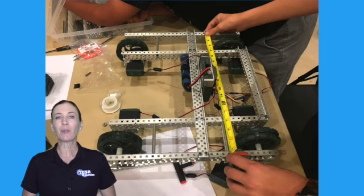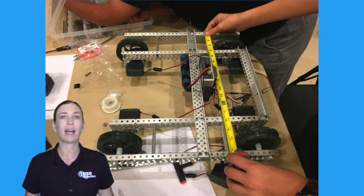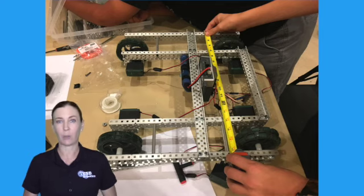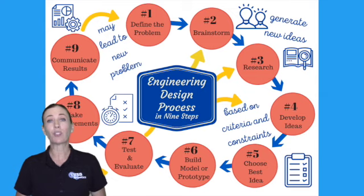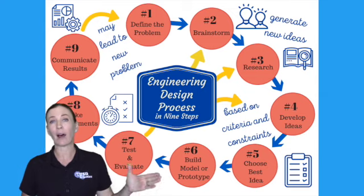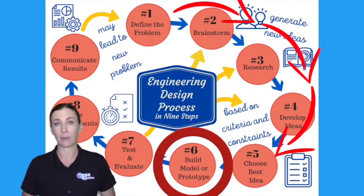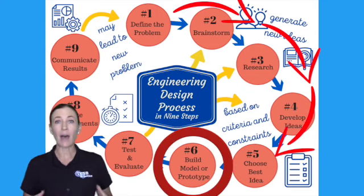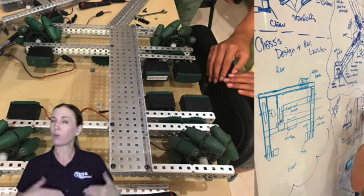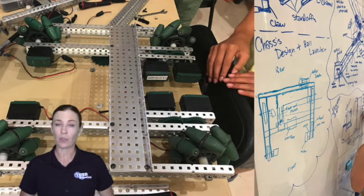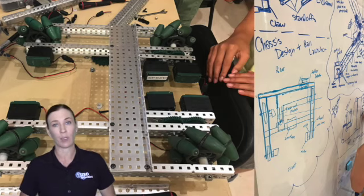Step number six is to build your prototype. Finally, you get to build. Generally, we go through steps one through five in a linear order until we get to step six. Now that we're at step six, we begin to build. We use all of our ideas from our notebook as a resource to help us while we go through the building process.